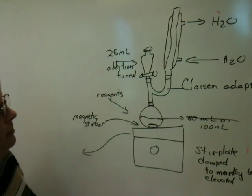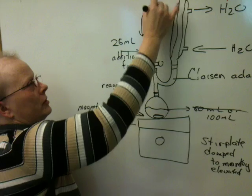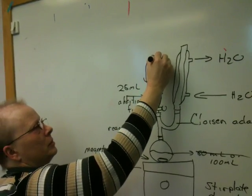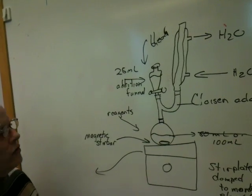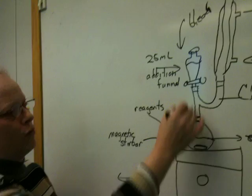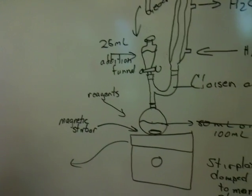I also call it the pear-shaped adapter. Now, up here, this is where the bleach goes. So the bleach is going to go up there. When you start the reaction, the reagents will be down here. And when you start the reaction, you're going to run in some of this bleach. And we'll help you with that.